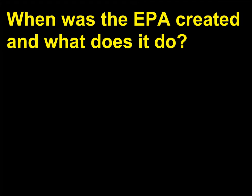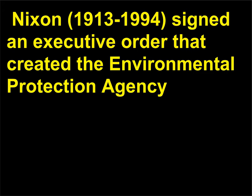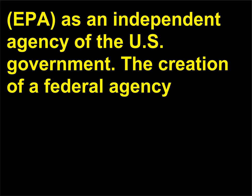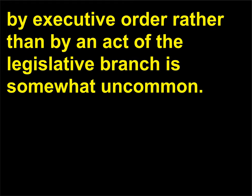When was the EPA created and what does it do? In 1970, President Richard M. Nixon (1913–1994) signed an executive order that created the Environmental Protection Agency (EPA) as an independent agency of the U.S. government. The creation of a federal agency by executive order rather than by an act of the legislative branch is somewhat uncommon.